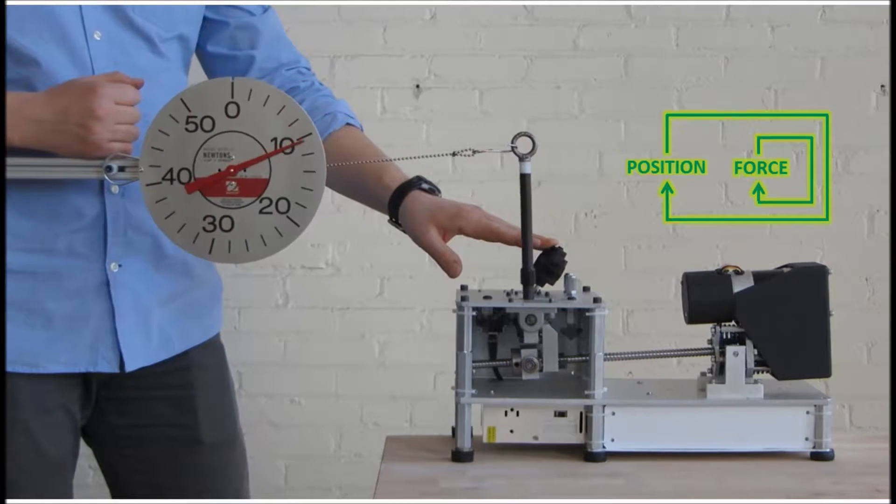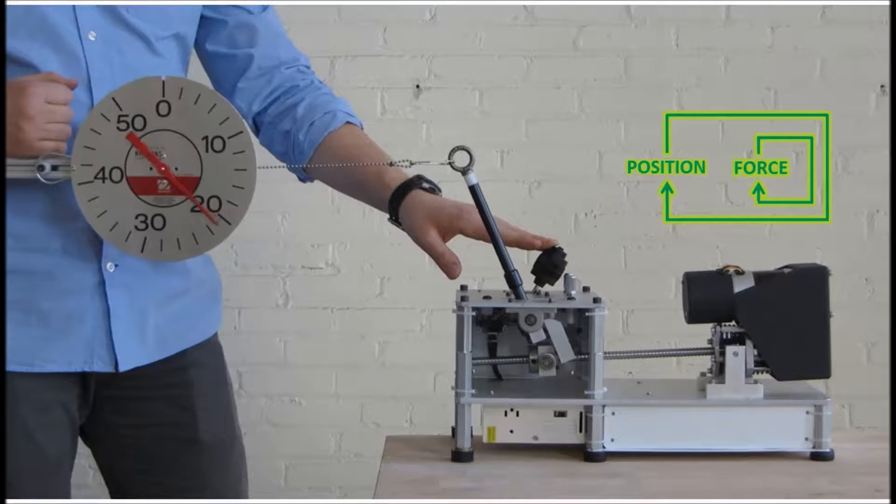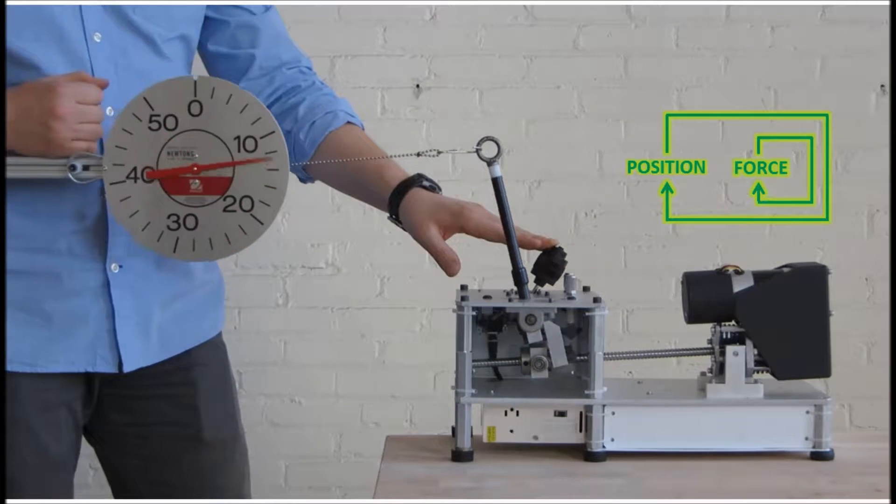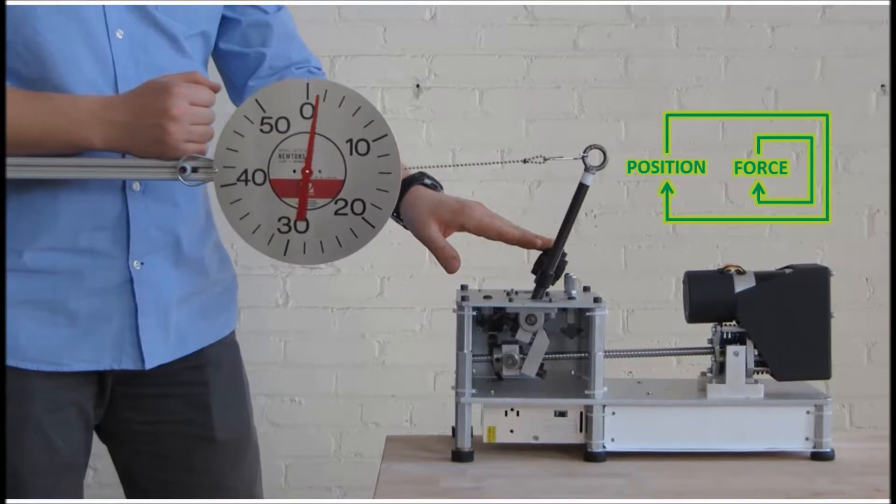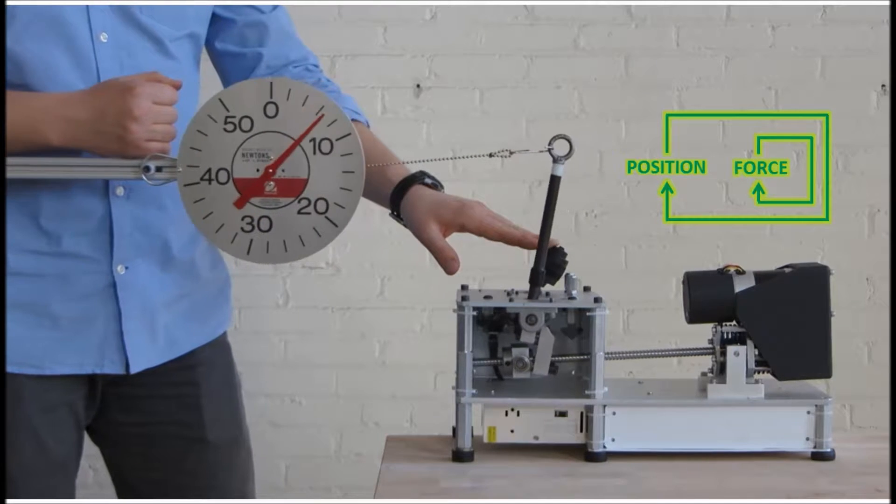To a person trying to do the deflecting, impedance control makes it feel like the end effector is attached to a spring. The farther he tries to deflect it, the more resistance he feels.